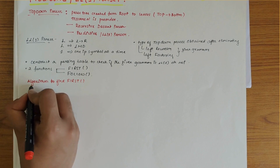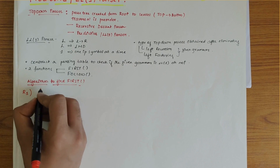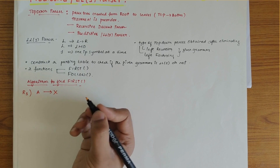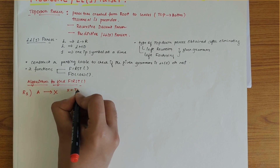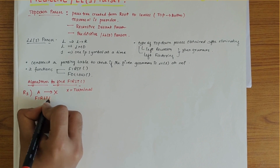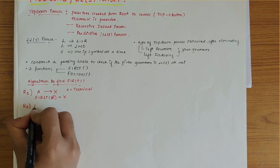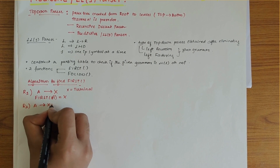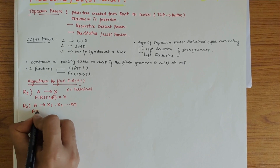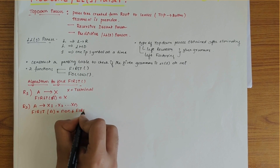Let's write the algorithm to find FIRST. There are majorly three rules. Rule one states that if the production is of the form A derives x, where x is a terminal, then FIRST of A is x. Rule two states that if A derives X1 X2 ... Xn, then FIRST of A is equal to non-epsilon FIRST of X1.